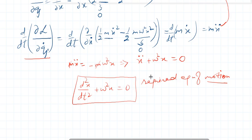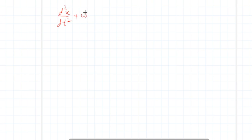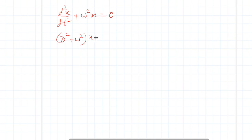We can also find the solution to see the trajectory of the harmonic oscillator. If you are asked only for the equation of motion, then d²x/dt² + ω²x = 0 is sufficient. But if asked for the trajectory or behavior of the simple harmonic oscillator, we need to solve this differential equation. We write it using the differential operator as (D² + ω²)x = 0.